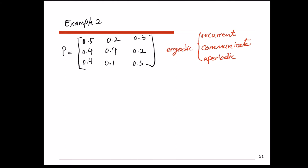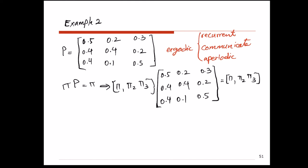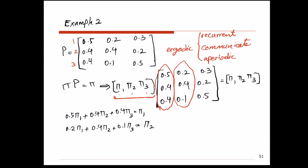To find the steady-state properties, we solve the equation: vector pi multiplied by one-step transition probability matrix P equals vector pi. Since this Markov chain has three states, vector pi has three elements — pi 1, pi 2, pi 3 — representing the long-run probabilities of being in state 1, state 2, or state 3. We multiply vector pi by each column of the transition matrix P to generate three equations.